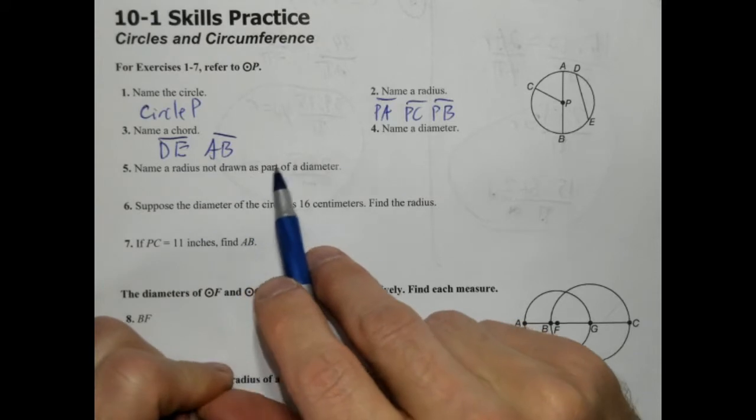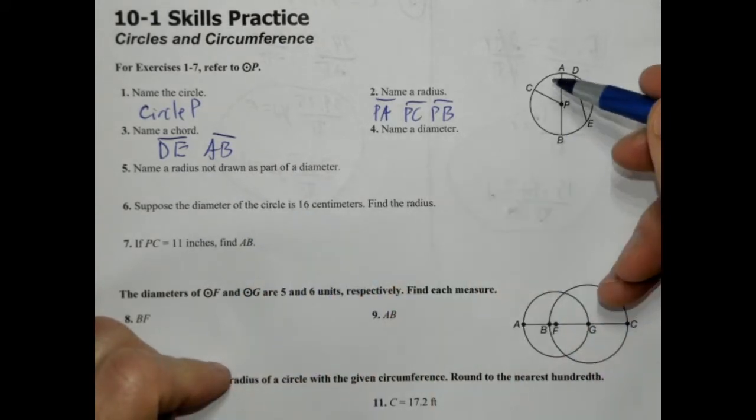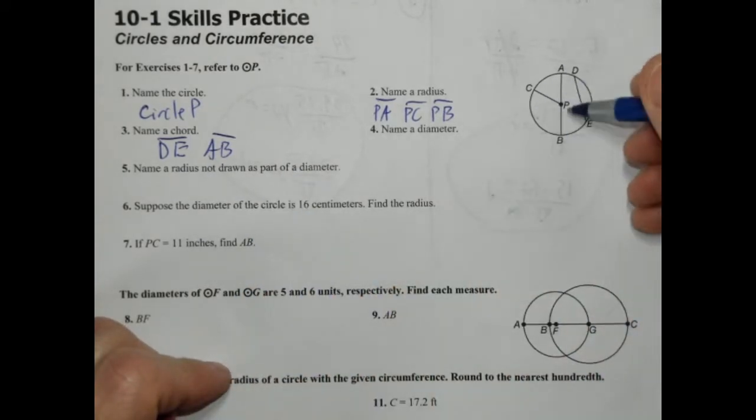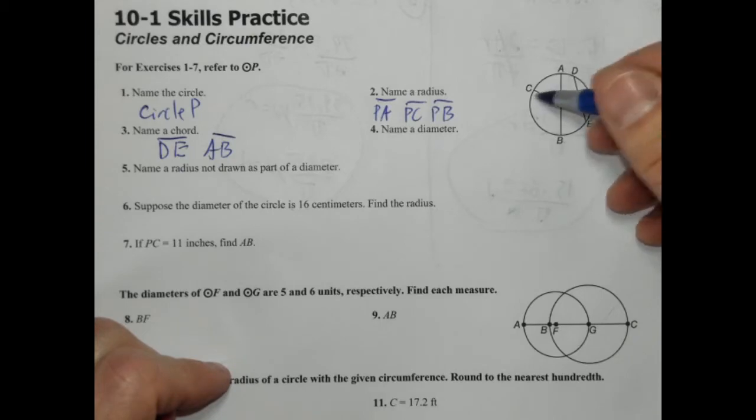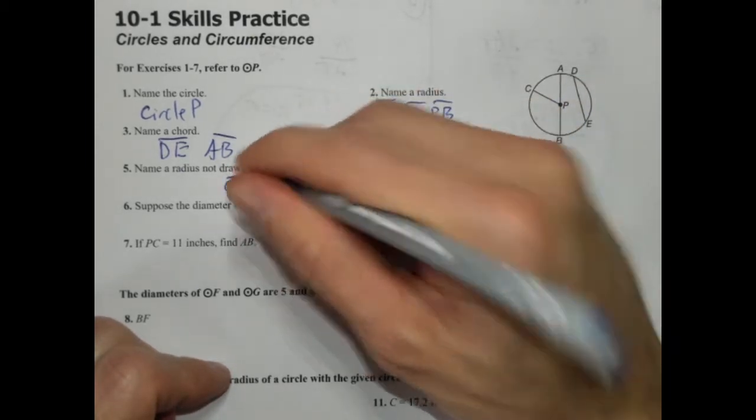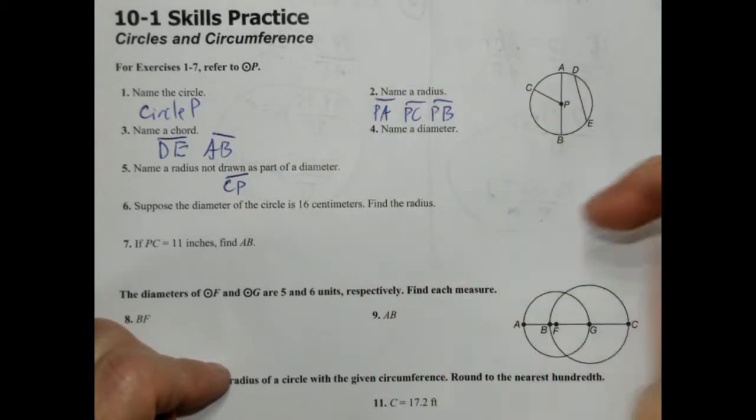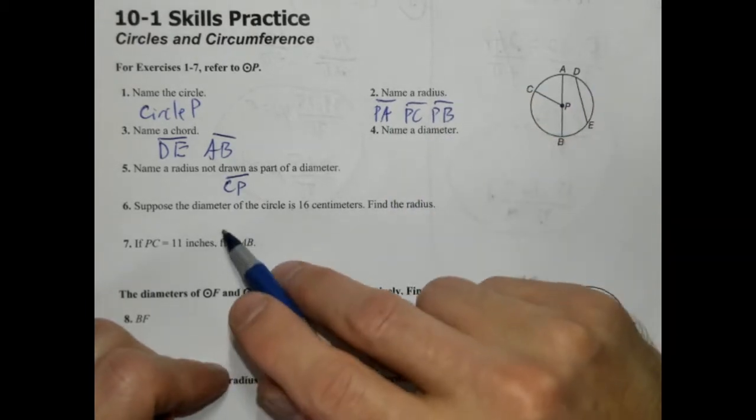Name a radius not drawn as part of a diameter. So, again, these are both radii drawn as part of a diameter, so this would only be CP. Now, radius is a line segment who has one endpoint on the center and one in the circle itself.